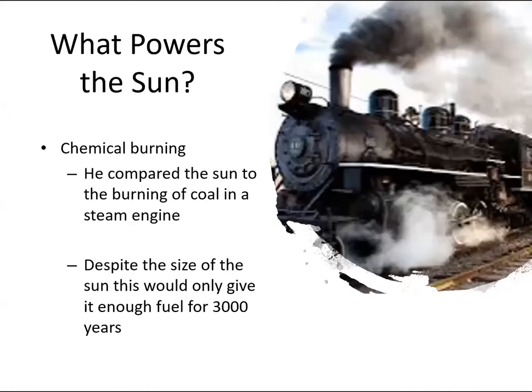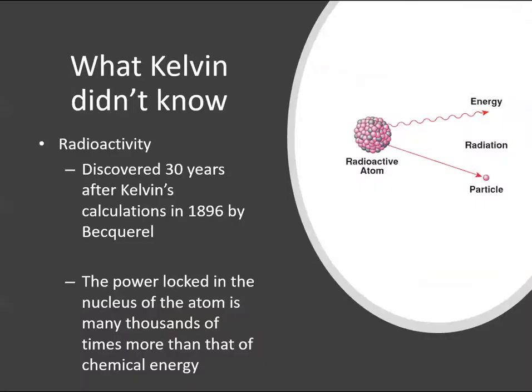And he worked out that if the entire Sun was made of coal and burning, it would only have enough fuel to keep it burning and producing the energy that it does for 3000 years. And he knew that was wrong because even back in Victorian times, they knew that the Chinese history went back further than that and the dates of the pyramids and so forth. Of course, what he didn't know back then, because it wasn't discovered until 1896, was anything about radioactivity and nuclear energy and the power locked in the nucleus of the atom, which is thousands of times more than is available from chemical energy, such as burning of coal.